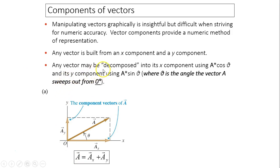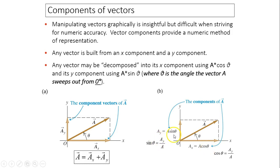Similarly, any vector can be decomposed into its x components using A times cosine theta and its y components using A times sine theta. Notice this theta is the angle the vector A sweeps out from 0 degrees, measured counterclockwise. This relationship is derived from SOHCAHTOA.